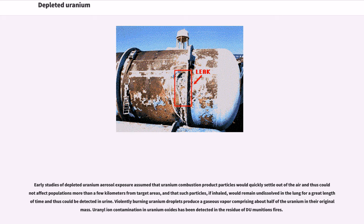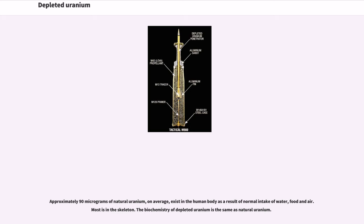Early studies of depleted uranium aerosol exposure assumed that uranium combustion product particles would quickly settle out of the air and thus could not affect populations more than a few kilometers from target areas, and that such particles, if inhaled, would remain undissolved in the lung for a great length of time and thus could be detected in urine. Violently burning uranium droplets produce a gaseous vapor comprising about half of the uranium in their original mass. Approximately 90 micrograms of natural uranium, on average, exist in the human body as a result of normal intake of water, food, and air — most is in the skeleton.